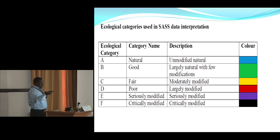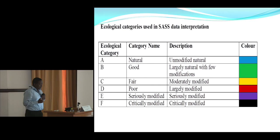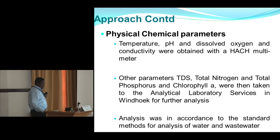Using ASPT and the SAS score, if you get category A it indicates that the river at that site is natural — meaning no modification. If you get category F, that means critically modified, which is alarming and requires action. There is also a color coding system used for interpretation of SAS results.